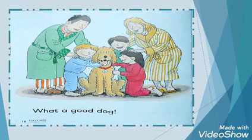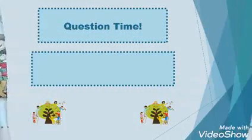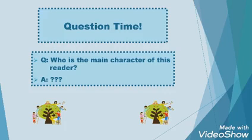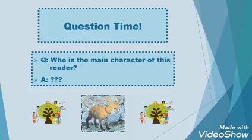Now here our story comes to an end. Dear students, did you enjoy this reader? I am sure you all really got amused by having this reader. Now it's question time. The question is: who is the main character of this reader? The options are Kipper, Chip, or Floppy. The answer will be asked in the video session. Now dear students, here is the time to wind up the lesson. In the next lesson, I will be here with you again with another exciting reader. So till then, take good care of yourself and stay home and stay safe. Thank you so much. Allah Hafiz.